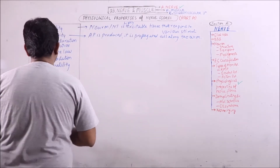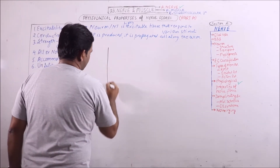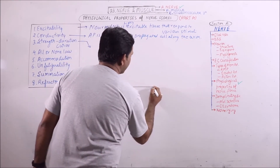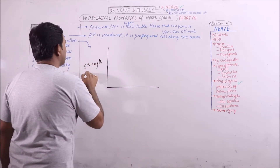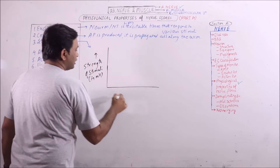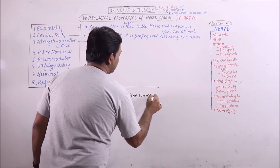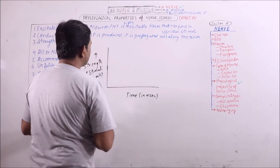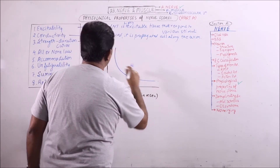Now, the strength-duration curve. If we draw the strength-duration curve, this is one axis and this is another axis. This axis represents the strength of stimuli in millivolts, and this axis represents time taken in milliseconds. If we draw the curve, we obtain a curve like this.